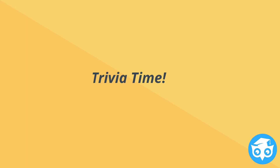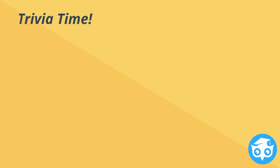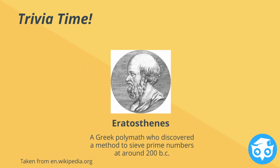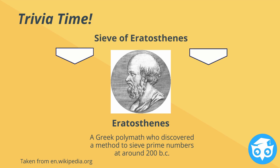Trivia time! It was Eratosthenes who discovered a way to sieve out prime numbers in 200 BC. He is known for the Sieve of Eratosthenes.